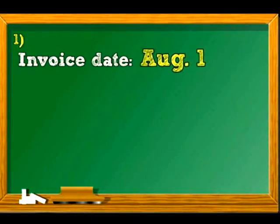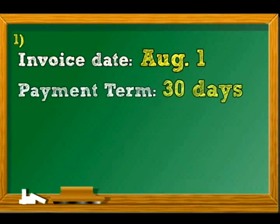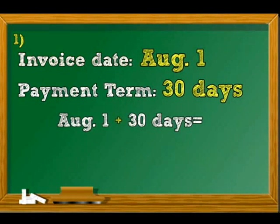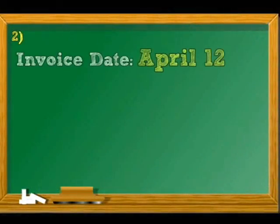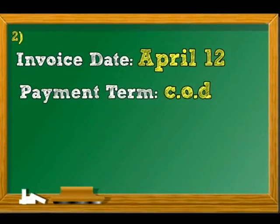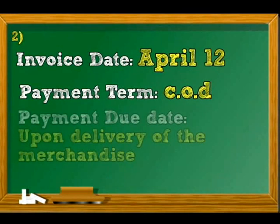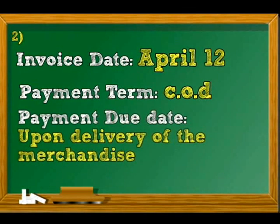Let's state the payment due dates of the following invoices. The invoice date is August 1 with a payment term of 30 days — the payment is due on August 31. The invoice date is April 12 with a payment term of COD or Cash on Delivery — the payment due date is upon delivery of merchandise.